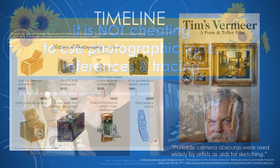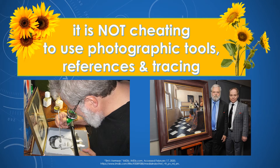The important takeaway is that it is not cheating to use photographic tools, references, and tracings. Tim, a really dedicated scientific mind and admirer of art, decided to recreate a Vermeer painting. He actually built the room and used the camera obscura — essentially a mirror on an angle that reflects up to a lens — to trace the image, which he put upside down so he could paint it right side up. Tim's Vermeer has been a huge inspiration for me as an artist, because it made me realize I can and should use these tools.